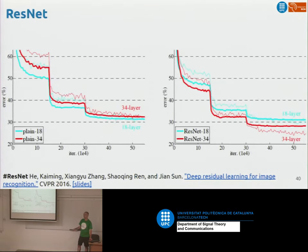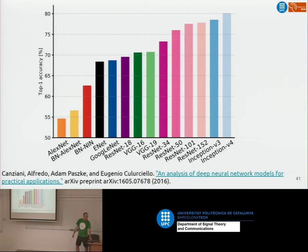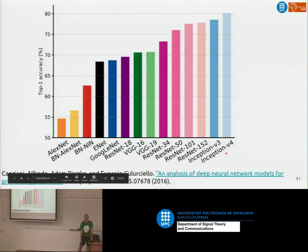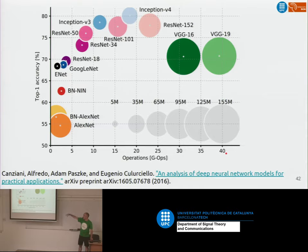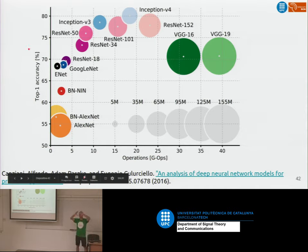ResNet improved significantly with those 152 layers. A comparison of these models shows accuracy versus computational operations, with the size of the bubble representing number of parameters. You can compare AlexNet, VGG, GoogLeNet, ResNet, and various Inception and ResNet evolutions on this plot.